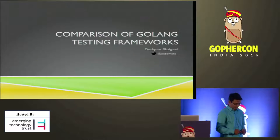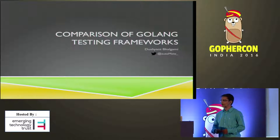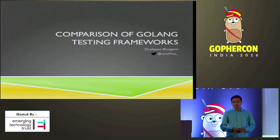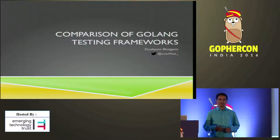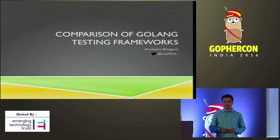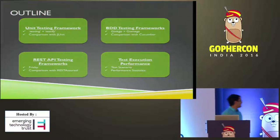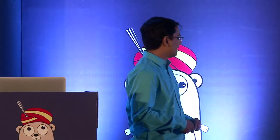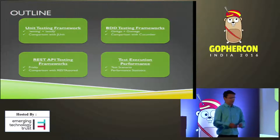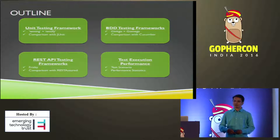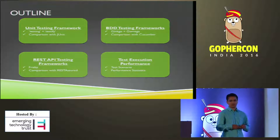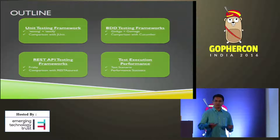I'm not going to deep dive into any testing framework, but what I've tried to come up with is what are the key features of testing frameworks provided by the Golang page, and what we need more in those frameworks so that it can make testers or automation testers' lives easier. I'm going to talk about three types of testing frameworks: unit testing, BDD, and REST API testing frameworks. And last, I have some statistics about the testing frameworks — Go versus non-Golang testing frameworks.